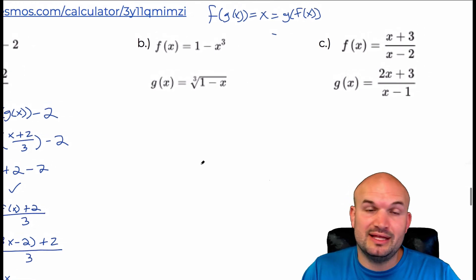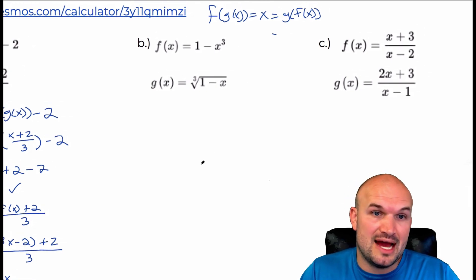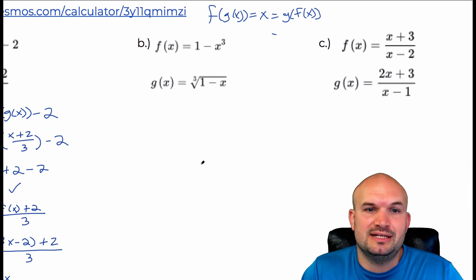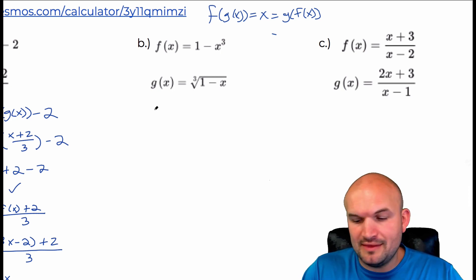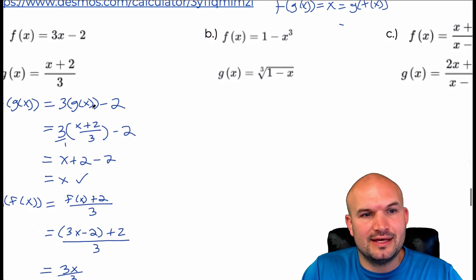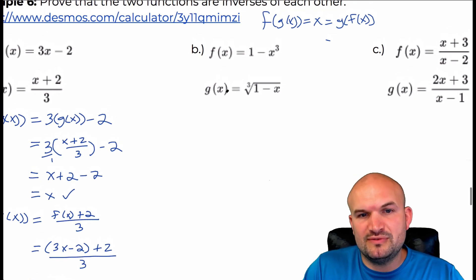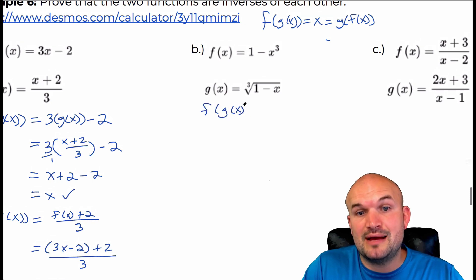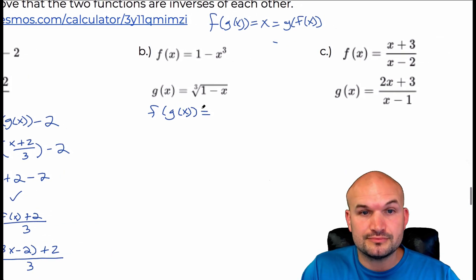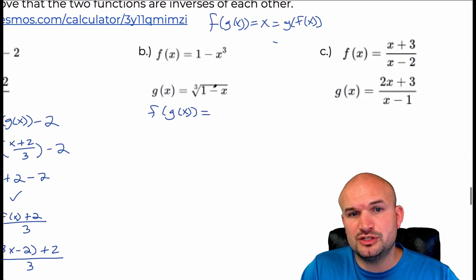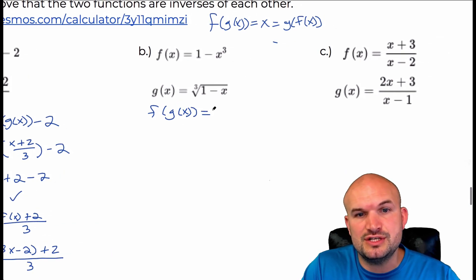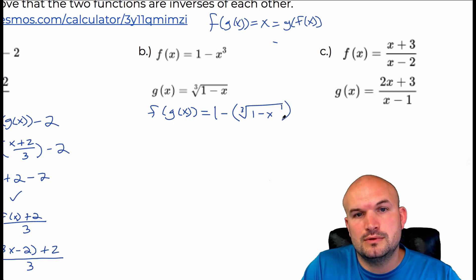Let's get into the cubic one — this is where parentheses become really important, so it's a good habit to keep. I'll skip straight to the computation step. First, let's do f of g of x, which means I'm plugging the g of x function into f of x. So that would look like the cube root of one minus x cubed.